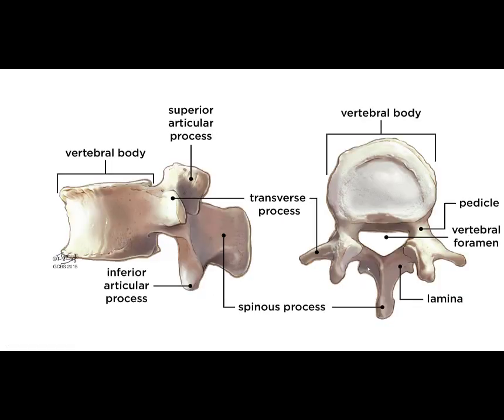Now let's take a look at a typical lumbar vertebra. You should know the various parts of the vertebra, including the vertebral body, the transverse process, the spinous process, the pedicle, the lamina, the vertebral foramen, the superior and inferior articular facets, and the area in between them known as the pars interarticularis.